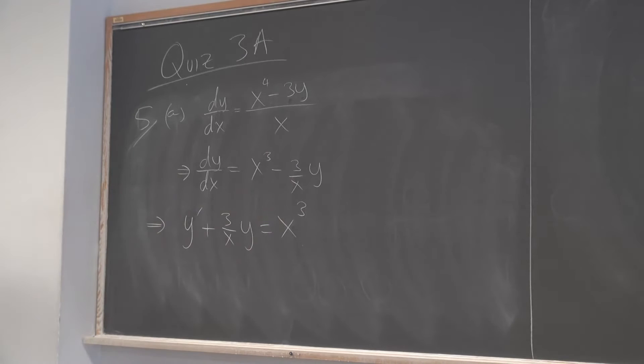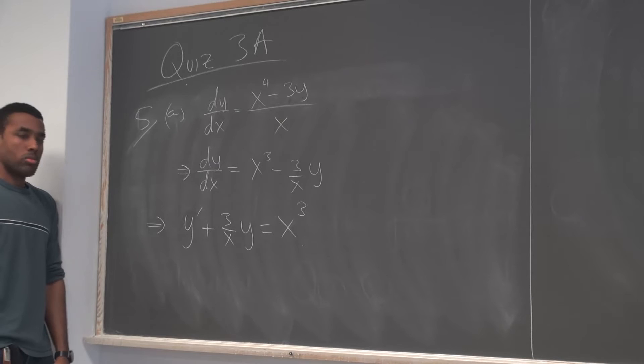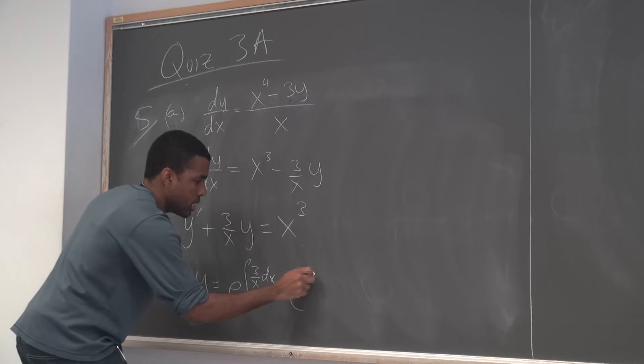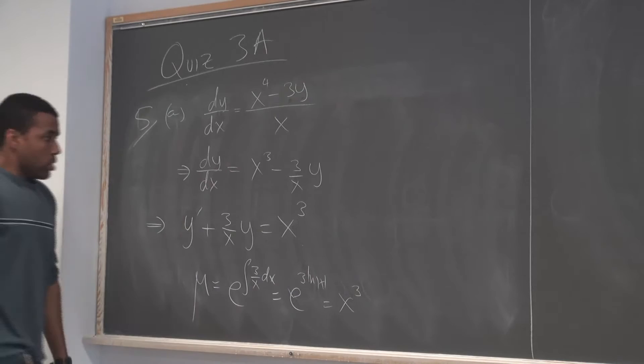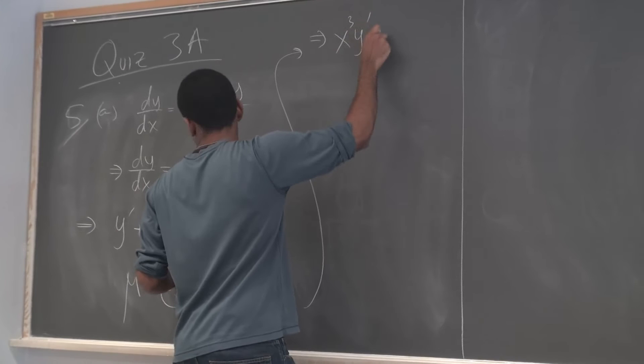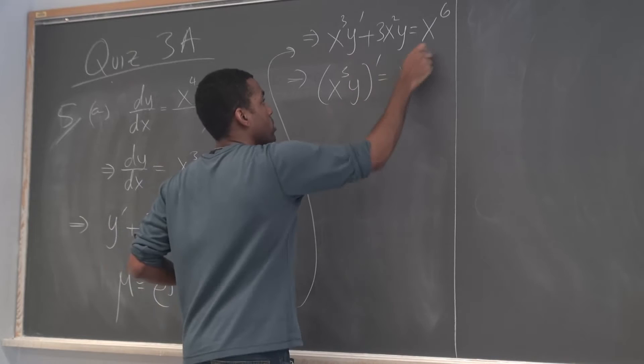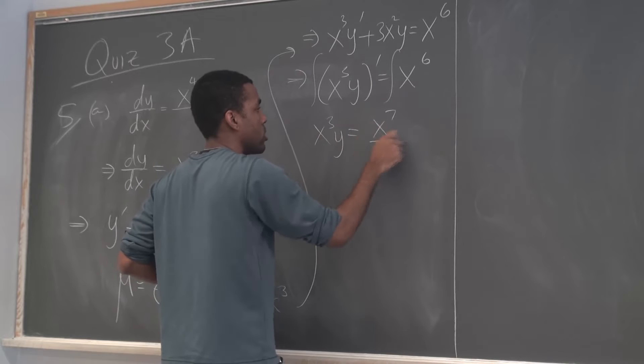A linear equation looks like y' + p(x)·y = q(x) — a function times y equals some function without y's in it. The integrating factor is e to the integral of 3/x, which is e^(3 ln x) = x^3. So you multiply through by x^3. The left side becomes x^6 on the right, and the right side always becomes d/dx[integrating factor × y]. Integrating both sides gives x^3 · y = x^7/7 + C.